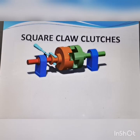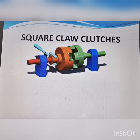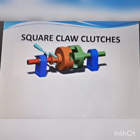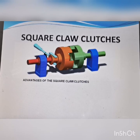The first type of positive clutch is the square claw clutch, also called the square jaw clutch. It gets its name from the square-shaped jaws. The driven shaft has a lever used to disengage it — pulling it away from the input shaft. The driving and driven shafts engage via these square jaws.